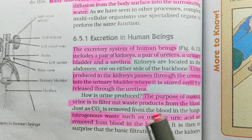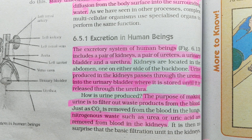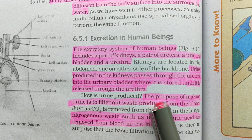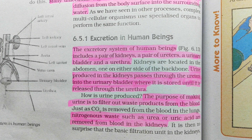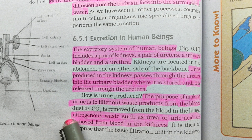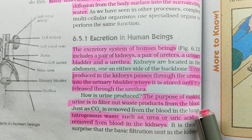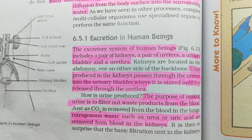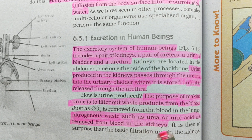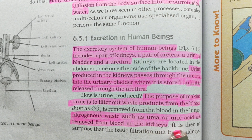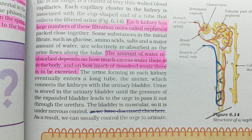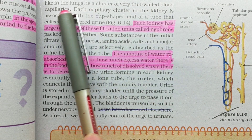How is urine produced? The purpose of making urine is to filter out waste products from the blood — blood ki filtration. Just as carbon dioxide is removed from the blood in the lungs, nitrogenous waste such as urea or uric acid are removed from the blood in the kidneys. So jaise lungs blood se carbon dioxide remove karte hain, kidneys nitrogenous waste — urea aur uric acid — ko blood se remove karti hain. The basic filtration unit in the kidneys, like in the lungs, is a cluster of very thin-walled blood capillaries.